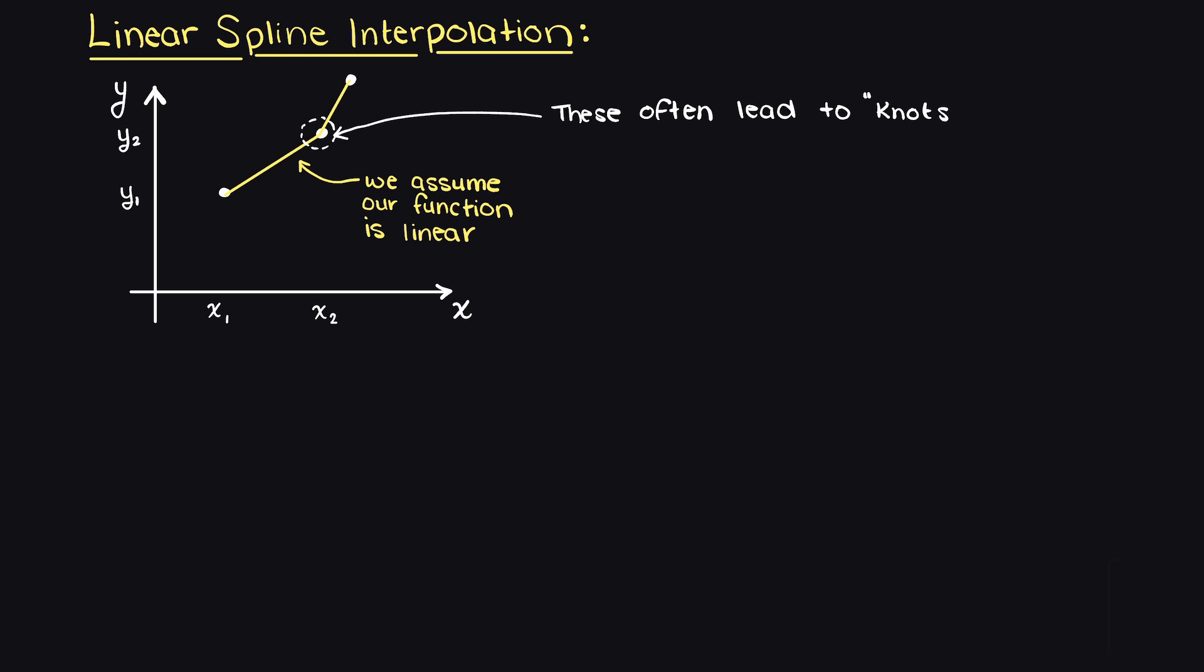As you can see, we usually get these unwanted sharp changes in our function, and you may see these called knots. These are unideal and why cubic splines are much more commonly used, however these will be the subject of our next numerical methods theory video.